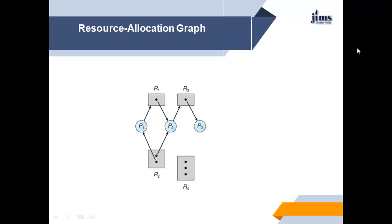Given the definition of a resource allocation graph, it can be shown that if the graph contains no cycle, then no process in the system is deadlocked. If the graph does contain a cycle, then a deadlock may exist. If each resource type has exactly one instance, then a cycle implies that a deadlock has occurred. If the cycle involves only resource types each having only a single instance, then a deadlock has occurred and each process involved in the cycle is deadlocked. In this case, a cycle is both a necessary and sufficient condition for deadlock. If each resource type has several instances, then a cycle does not necessarily imply a deadlock — in that case, a cycle is a necessary but not sufficient condition for the existence of deadlock.